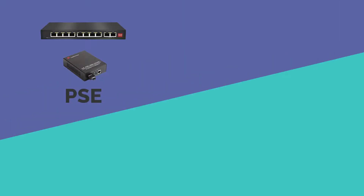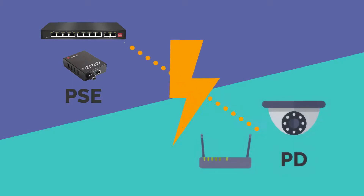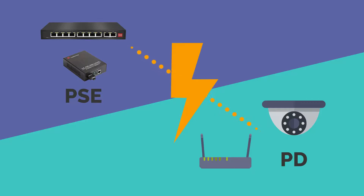There are always two types of devices in a PoE-powered system. PSE devices send power and data over the Ethernet cable to a connected PD. Any network device that PoE powers is referred to as a power device, or PD. Wireless access points, IP security cameras, and VoIP phones are common examples.